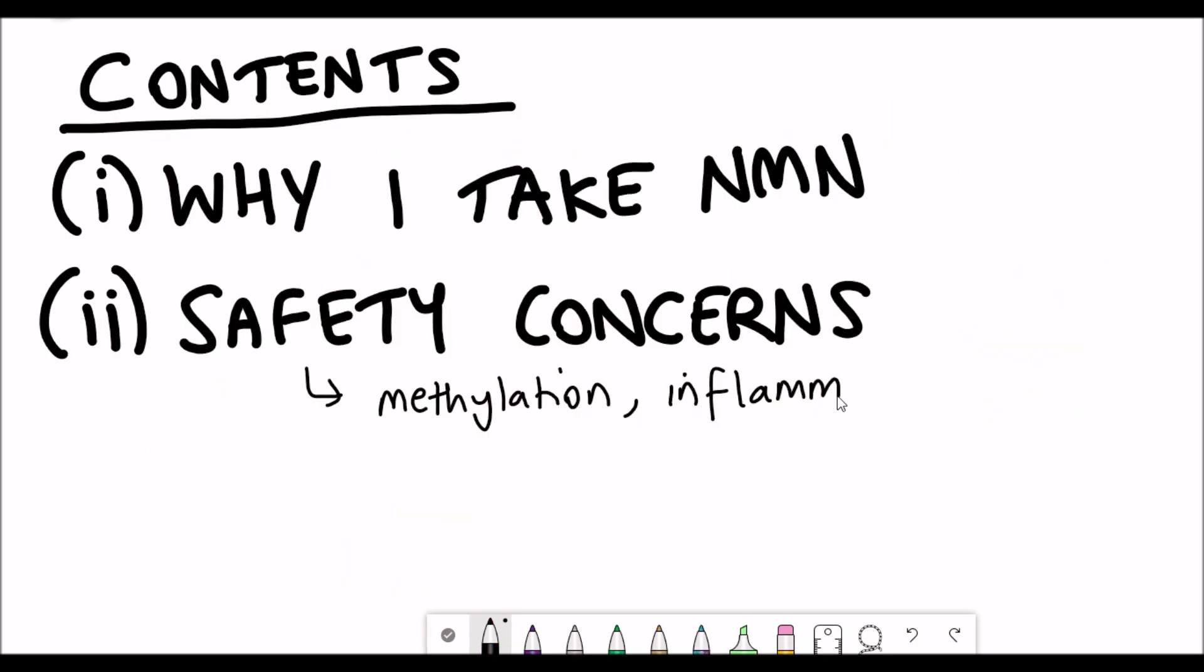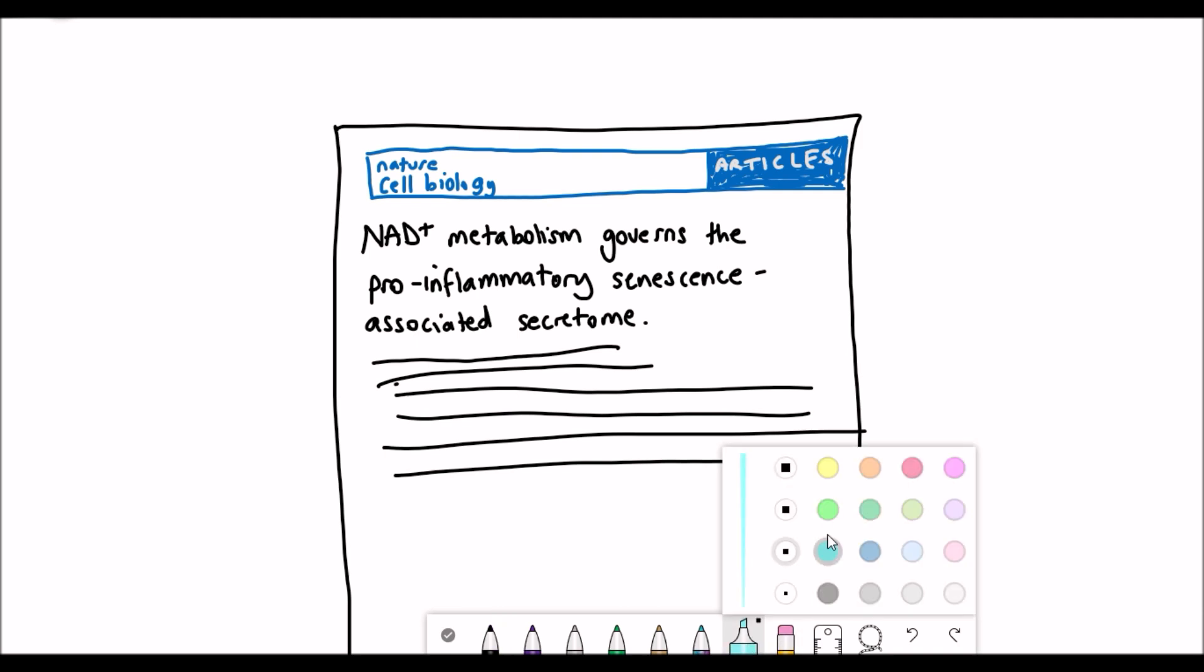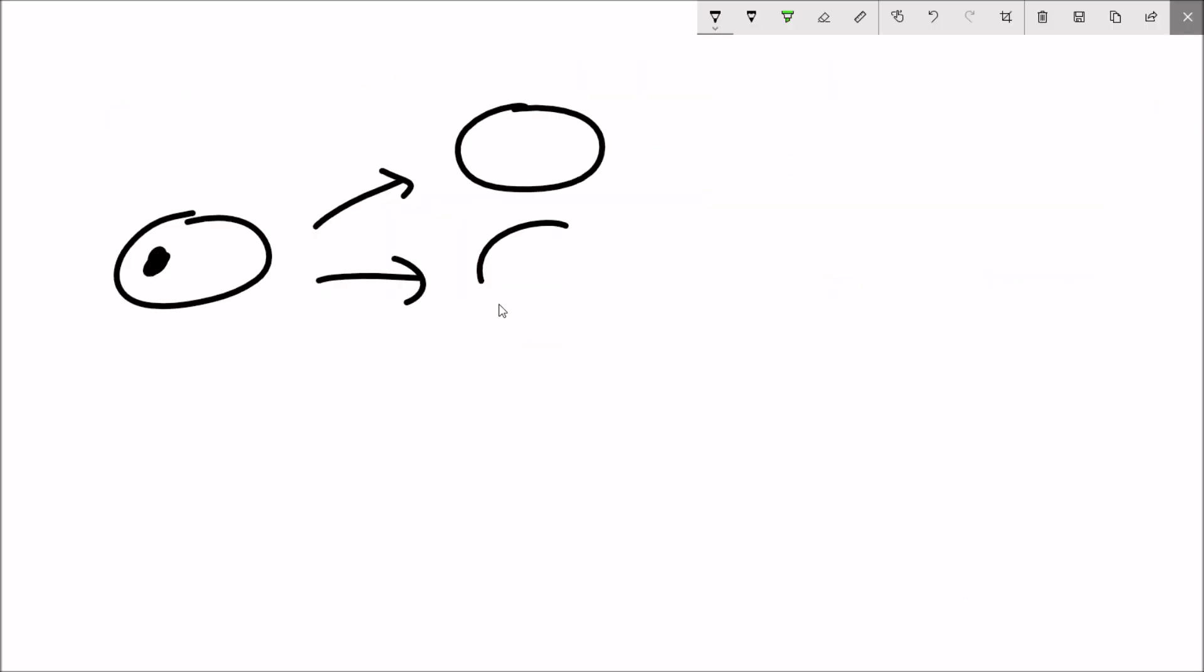So another warning for taking NMN has come from a paper that was published in Nature that talks about the link between NMN, NAD and inflammation and senescence. Maybe because this paper is more recent I don't know, but I've not really heard many people talk about this risk associated with NMN supplementation. So the title is 'NAD+ Metabolism Governs the Pro-Inflammatory Senescence Associated Secretome.' Now there might be a few scary words in that title but I'll try and break it down as much as I can.